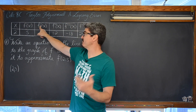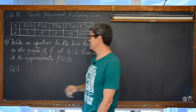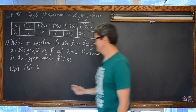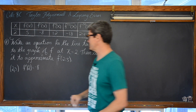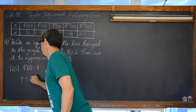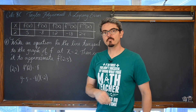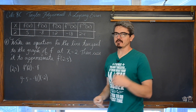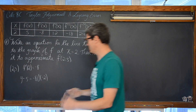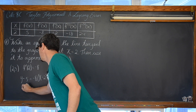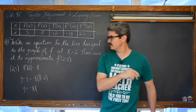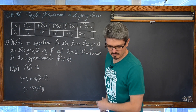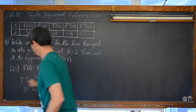We have that the slope, or f prime of 2, is equal to negative 8. So we have a point of tangency and therefore a line that is tangent to the graph: y minus 5 is equal to negative 8 times x minus 2. AP generally wants the equation in slope-intercept form. So we distribute the negative 8 and add 5: y is equal to negative 8x plus 16 plus 5, which gives us y equals negative 8x plus 21. That is our equation of the tangent line.